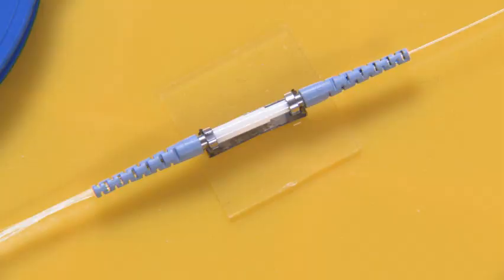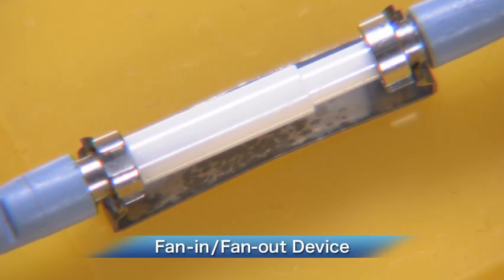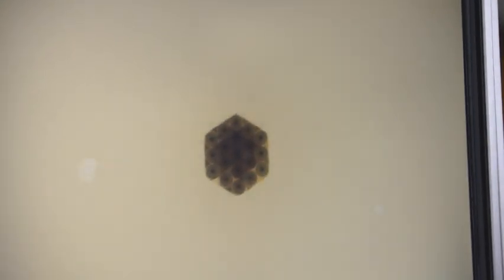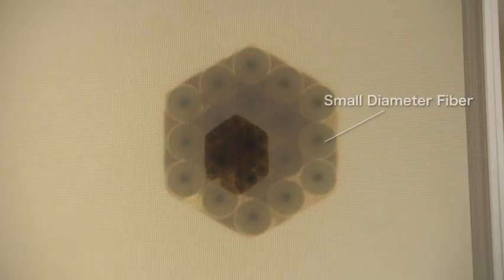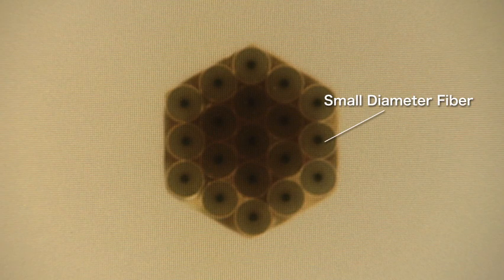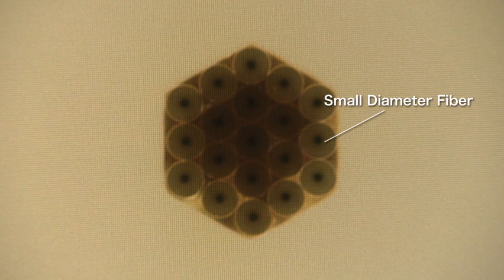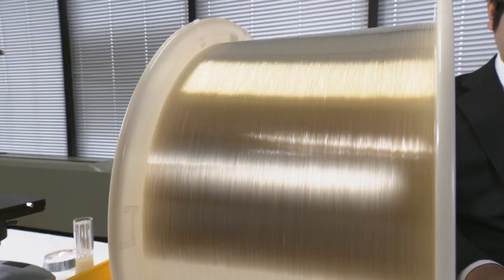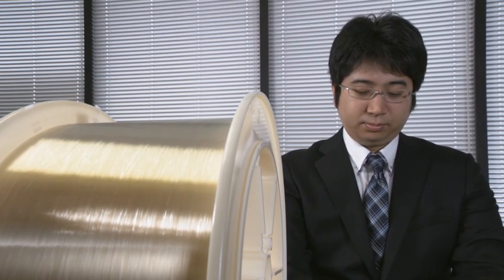The second new technology is a fan-in-fan-out device for passing optical signals into and out of the 12-core fiber. This device enables the 12-core fiber and small diameter fibers to be naturally aligned by filling precisely fabricated holes having a regular hexagonal shape with the small diameter fibers. This design simplifies the use of 12-core fiber.